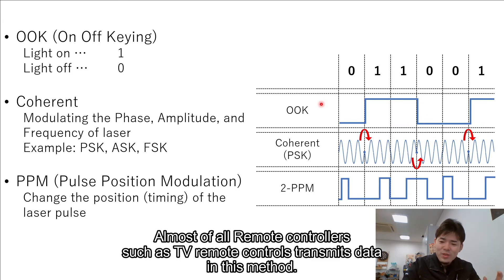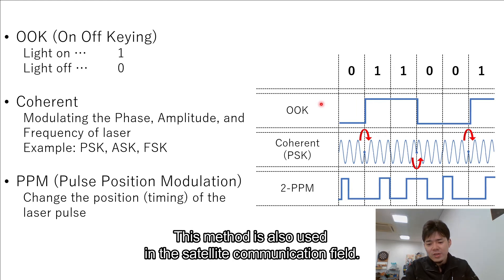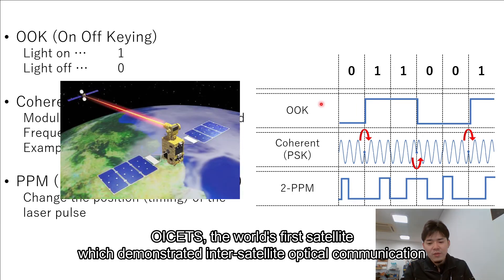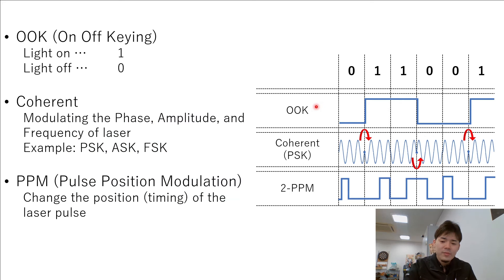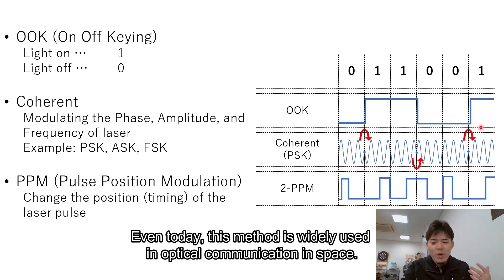Almost all remote controllers, such as TV remote controllers, transmit data in this method. This method is also used in the satellite communication method. OISETS, the world's first satellite which demonstrated inter-satellite optical communication between GEO to LEO, uses this communication method. Even today, this method is widely used in optical communication in space.